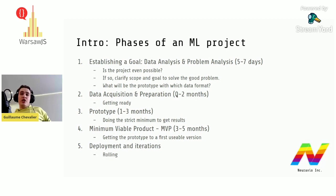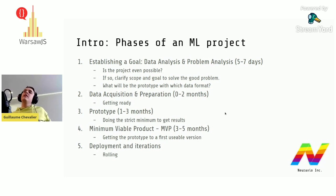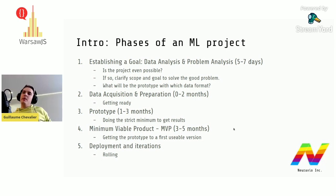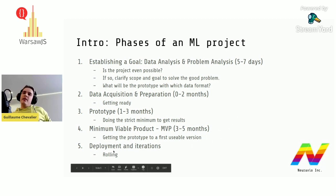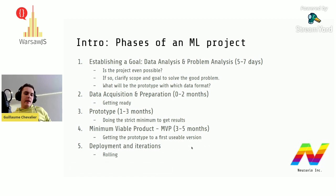After goal definition, you have the data acquisition and preparation step, which can take up to two months. Sometimes data is already well-formatted, but often not in business projects. Then you build a prototype — this can take one to three months — doing the strict minimum to achieve results. Then you build an MVP, a minimum viable product, which is functional and can be shown to people or used in an alpha or beta version. Then you deploy and iterate.